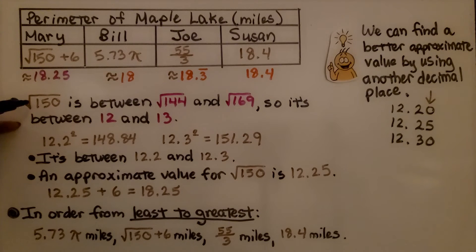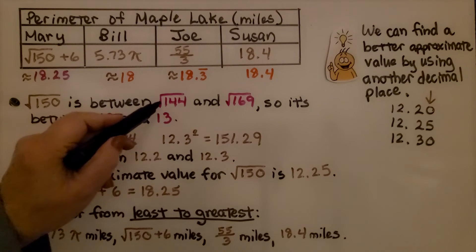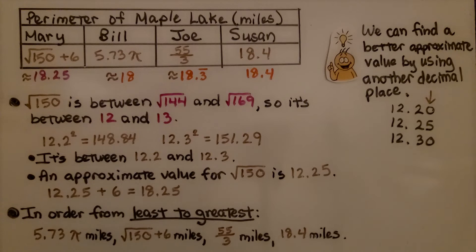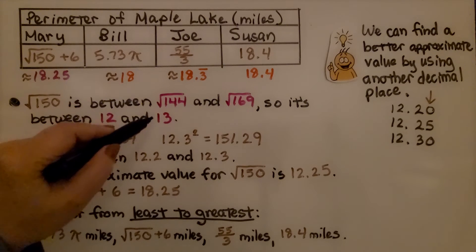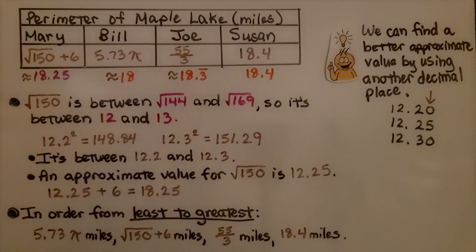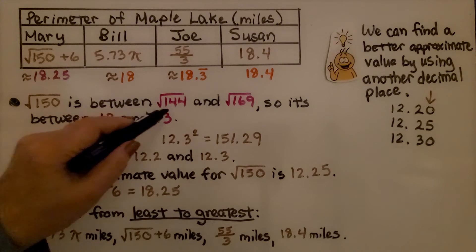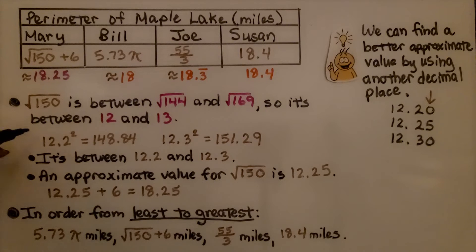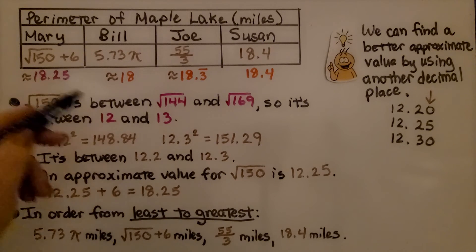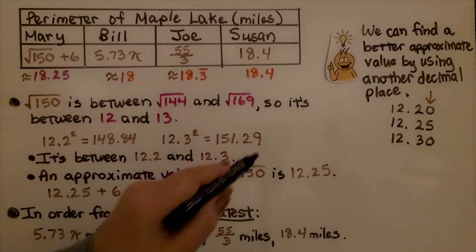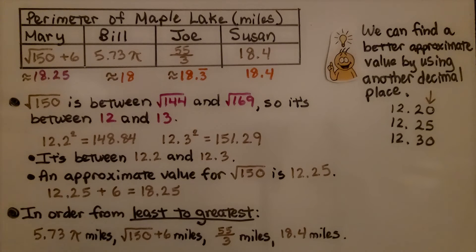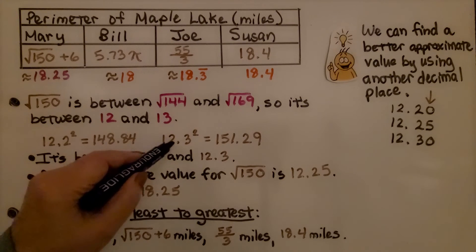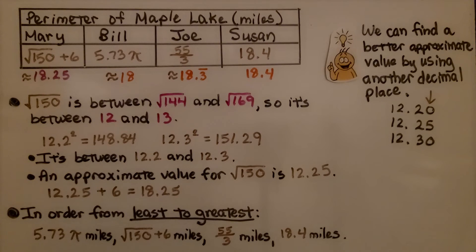The square root of 150 is between the square root of 144 and the square root of 169. 12 times 12 is 144, and 13 times 13 is 169, so we know it's between 12 and 13. We can try 12.2 times 12.2, and we get 148.84. We try 12.3 to get a little closer to 150, and we get 151.29, so we went over. So we know it's between 12.2 and 12.3.